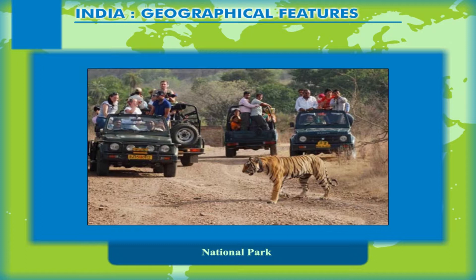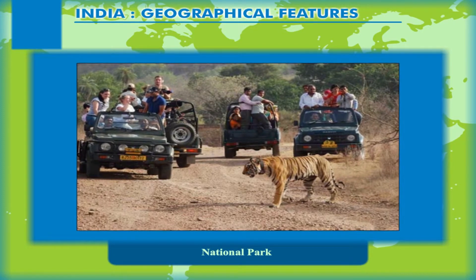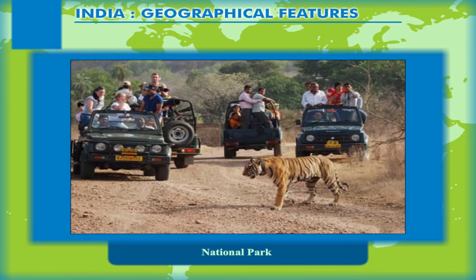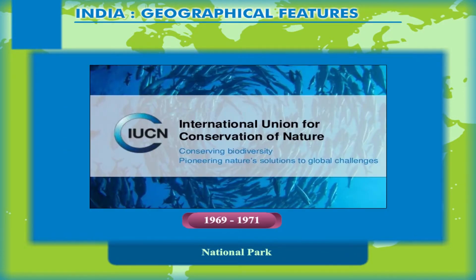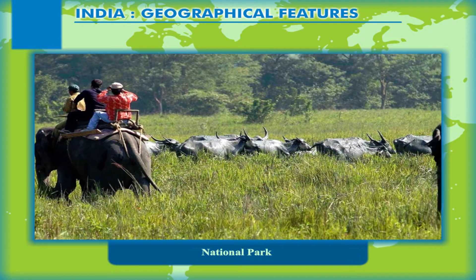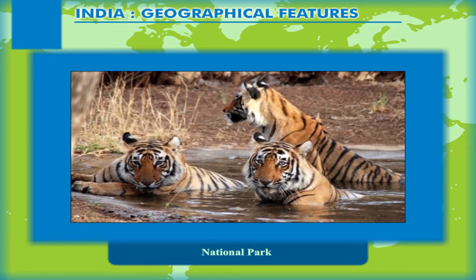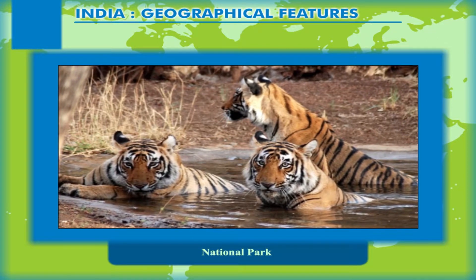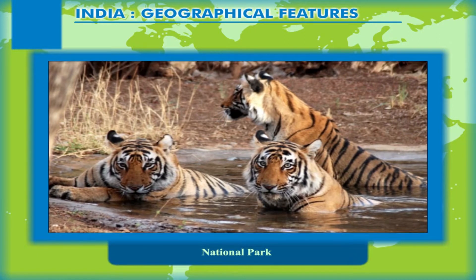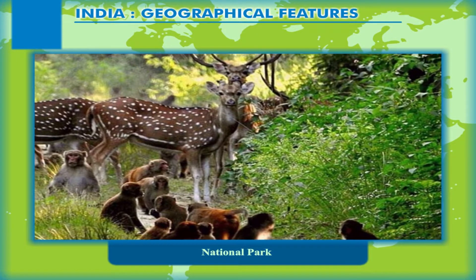National Park: A national park is a park in use for conservation purposes. Often it is a reserve of natural, semi-natural, or developed land that a sovereign state or country declares or owns. The IUCN (1969–1971) declared a national park to be a relatively large area where one or several ecosystems are not materially altered by human exploitation and occupation, where plant and animal species, geomorphological sites, and habitats are of special scientific, educative, and recreative interest, or which contain a natural landscape of great beauty.